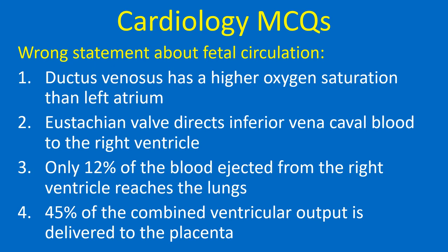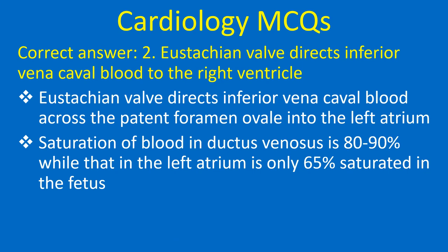Wrong statement about fetal circulation: 1. Ductus venosus has a higher oxygen saturation than left atrium, 2. Eustachian valve directs inferior vena cava blood to the right ventricle, 3. Only 12% of the blood ejected from the right ventricle reaches the lungs, 4. 45% of the combined ventricular output is delivered to the placenta. Correct answer: 2. Eustachian valve directs inferior vena cava blood to the right ventricle — this is wrong. The Eustachian valve directs inferior vena cava blood across the patent foramen ovale into the left atrium. Saturation of blood in the ductus venosus is 80–90% while that in the left atrium is only 65% in the fetus, because the lungs are not functional. Blood in the ductus venosus comes from the umbilical vein returning after oxygenation from the placenta.